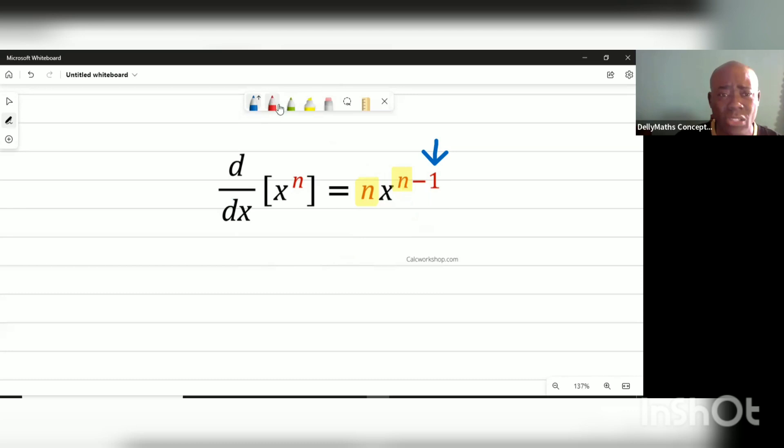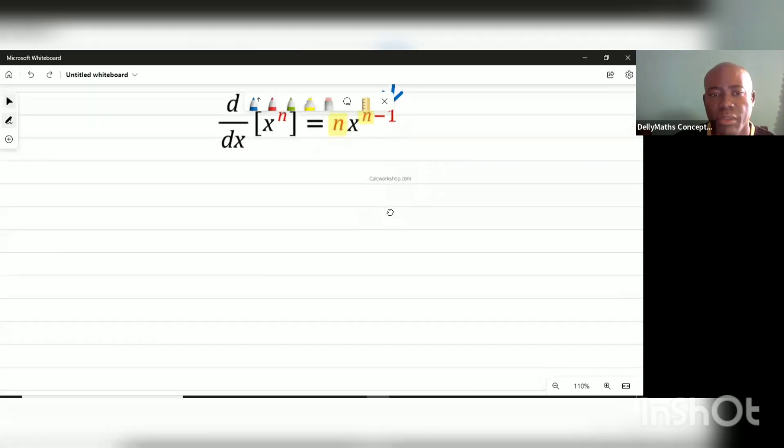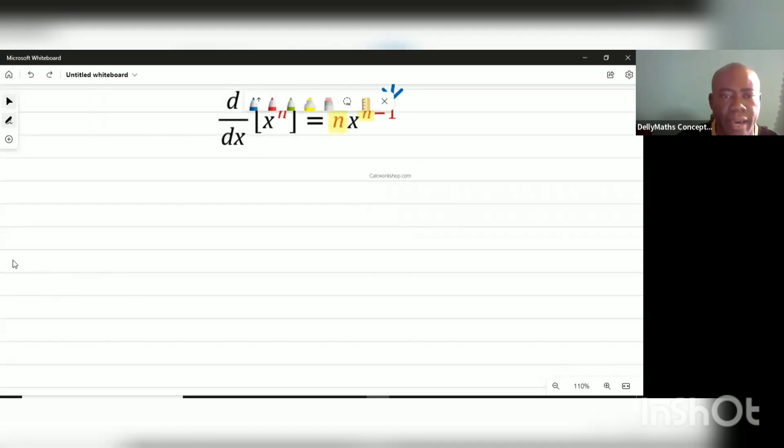Let's look at two examples of this. For example, let us say that we find ourselves with a case that says y equals 3x² minus 2x raised to the fifth plus one.